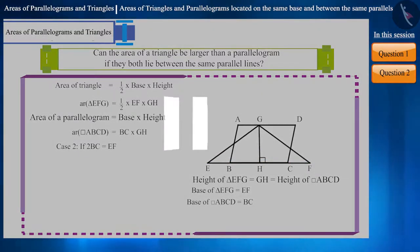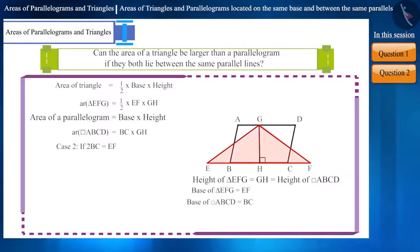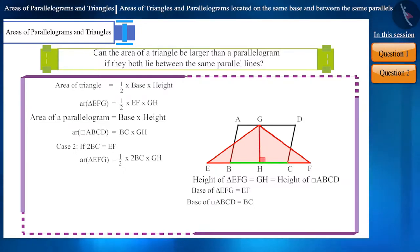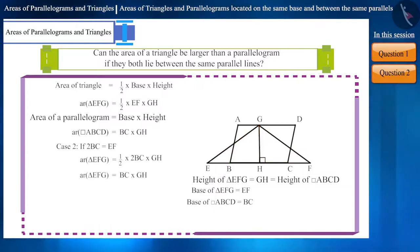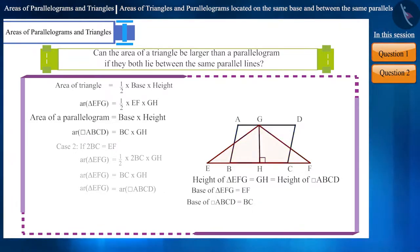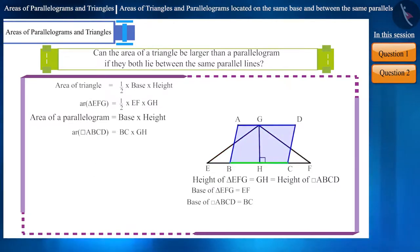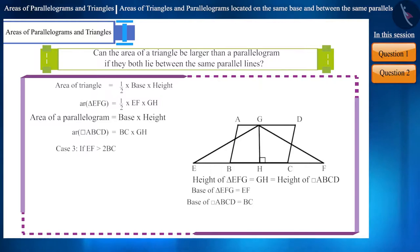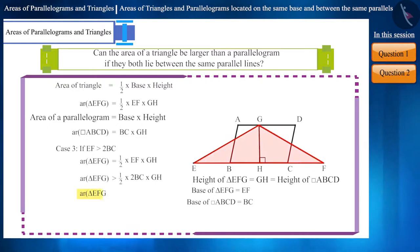Pause the video and think. The area of the triangle is equal to half multiplied by 2BC multiplied by GH, which would be BC multiplied by GH. In this case, the area of the triangle will be equal to the area of the parallelogram. But if the measurement of the base of the triangle is more than twice the measurement of the base of the quadrilateral, then the area of the triangle will be more than the area of the quadrilateral.